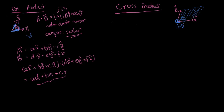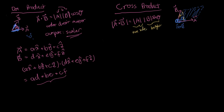The magnitude of A cross B is the area of the parallelogram formed by the two vectors. Written mathematically, the magnitude of A cross B equals the length of A times the length of B times sine theta. If theta is the angle between them, then B times sine theta gives the height of the parallelogram, while the length of A is one side. So the area equals length of A times the height.